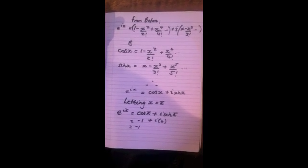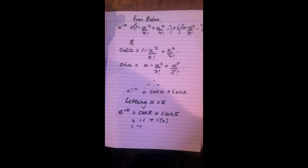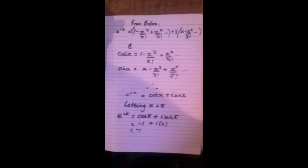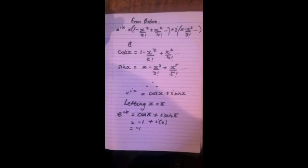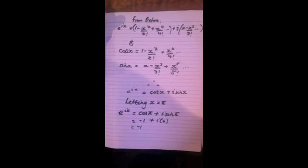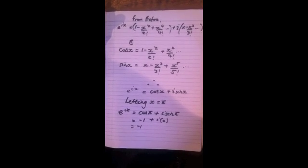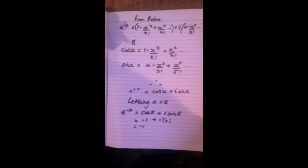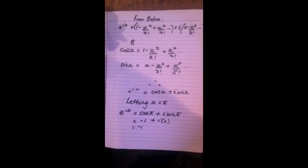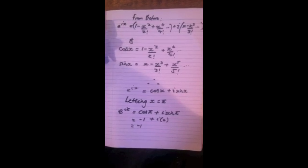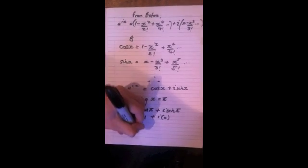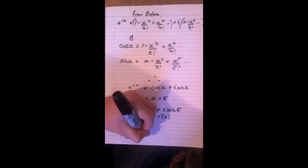Letting x equal pi, it is shown that e to the i pi equals cos pi plus i sin pi. Referencing the unit circle, it is seen that cos pi equals negative 1 and sin pi equals 0, and therefore e to the i pi equals negative 1 plus i times 0, and therefore e to the i pi is equivalent to negative 1. QED.